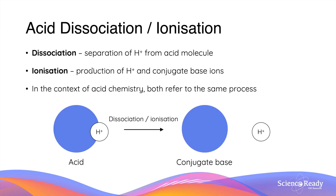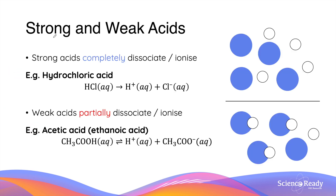In acid-base chemistry, the terms dissociation and ionization are often used interchangeably, but there is a discrete difference. Dissociation refers to the separation of a hydrogen ion from the acid molecule. As dissociation occurs, ions are produced — namely the hydrogen ion and the conjugate base, which is also an ion. The conjugate base is the molecule formed after an acid molecule gives up its hydrogen ion. In this area of chemistry, dissociation and ionization refer to the same process shown in the diagram.